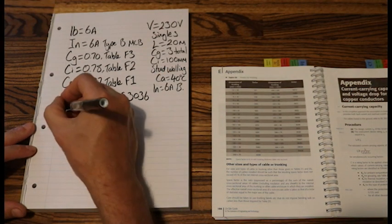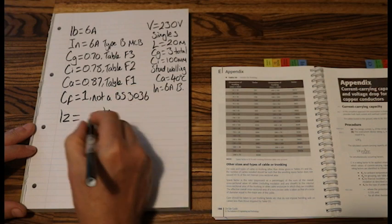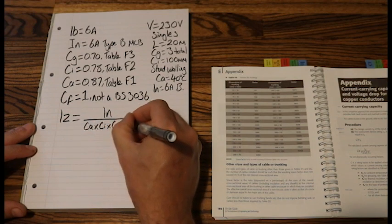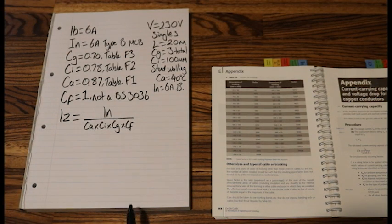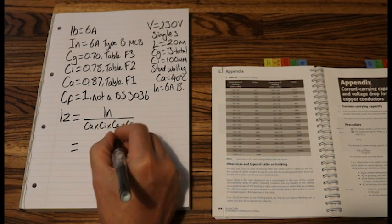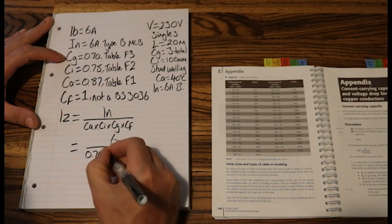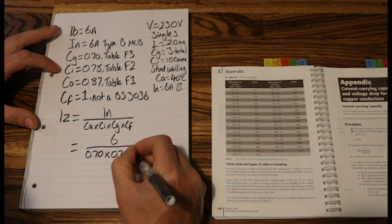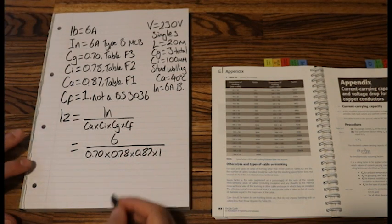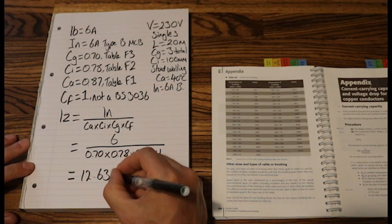Now we can do our IZ. So IZ. The equation for IZ is IN over any and all of the C factors that are relevant to the question. And in this question, we've got lots of C factors. So let's input the values into this formula. So 6 over 0.70 times 0.78 times 0.87 times 1. And that equals 12.63 amps.